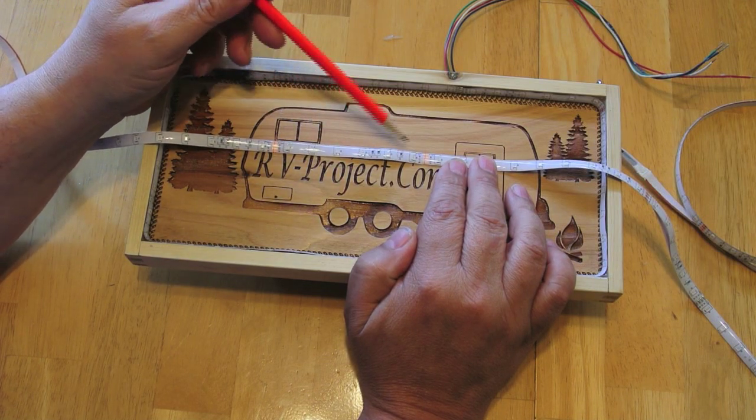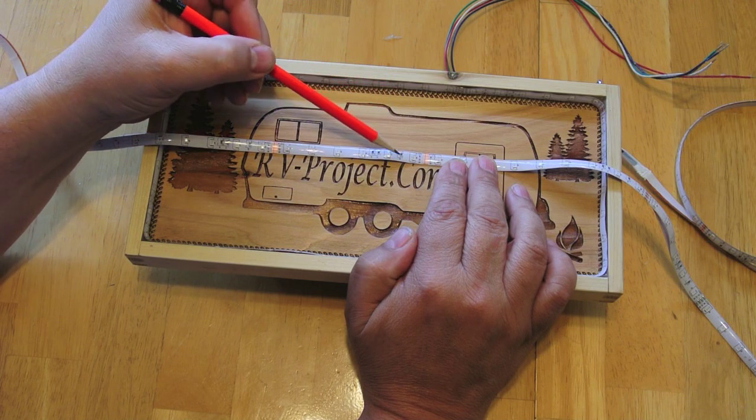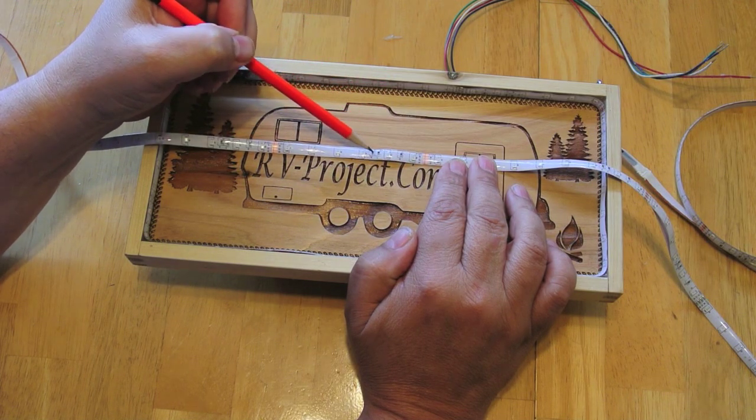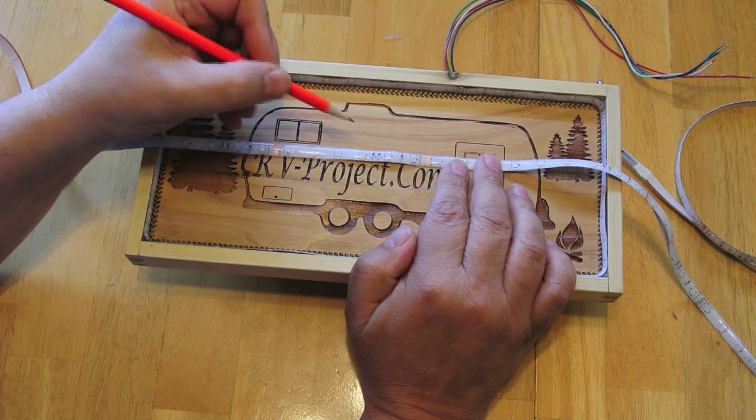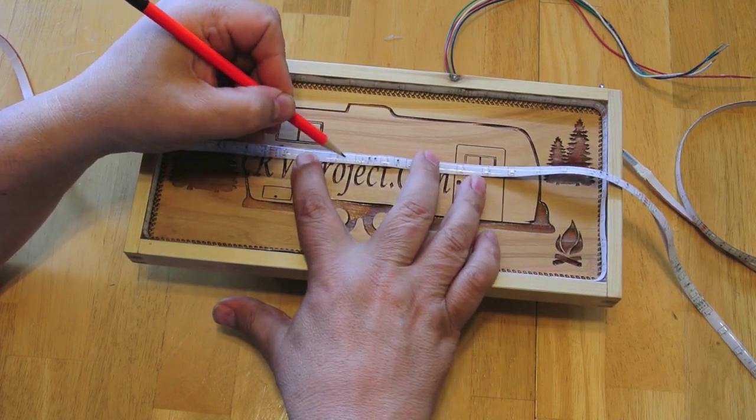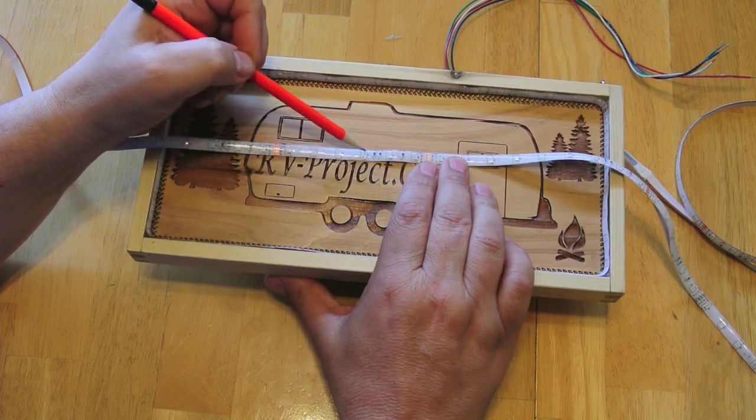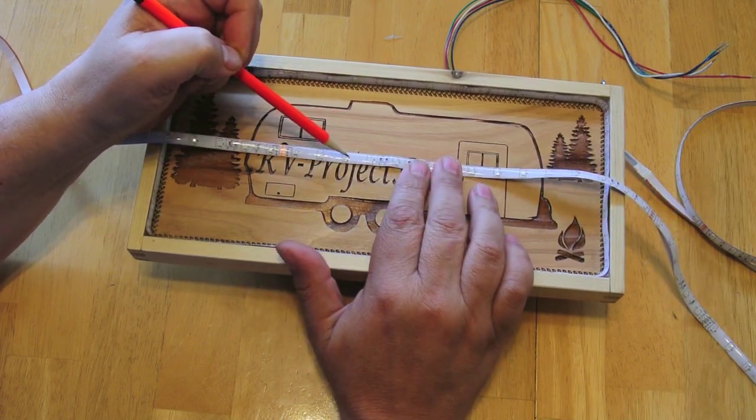And then we have the 3 resistors here, and these 3 resistors take care of both of these sets of lights, and we want to cut it right between the two, so we want to take this 4 inch strip and cut it into a 2 inch strip.